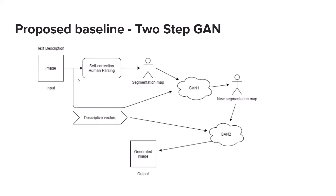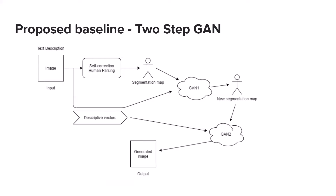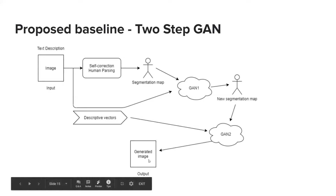We also extract descriptive vectors from the image as well as from the textual description. Both the newly formed segmentation images and the vectors are fed as input to the first GAN, which generates a new segmentation map in accordance with the textual description provided. This new segmentation map is then fed to a second GAN, which takes the initial descriptive vectors along with the new segmentation map and provides the required output.